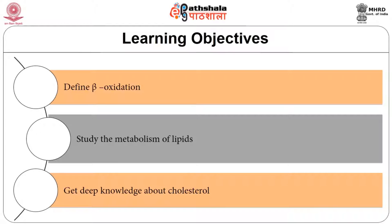The fatty acids in the body are mostly oxidized by beta oxidation. Cholesterol is an essential molecule in many animals, including humans, and is available easily through the diet. Cells can also synthesize it from simple precursors. The objective of this module is to define beta oxidation, to study the metabolism of lipids, and to get deep knowledge about cholesterol.